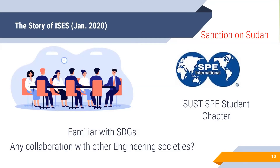The study of integration of sustainable engineering societies started in January 2020 when I met with the Society of Petroleum Engineers student chapter, an international organization. I asked them to link their activities with Sustainable Development Goals. They had never heard of SDGs. I also asked if they had any collaboration with other engineering societies within the university — they had none and didn't know of any other society working to promote sustainable development goals.